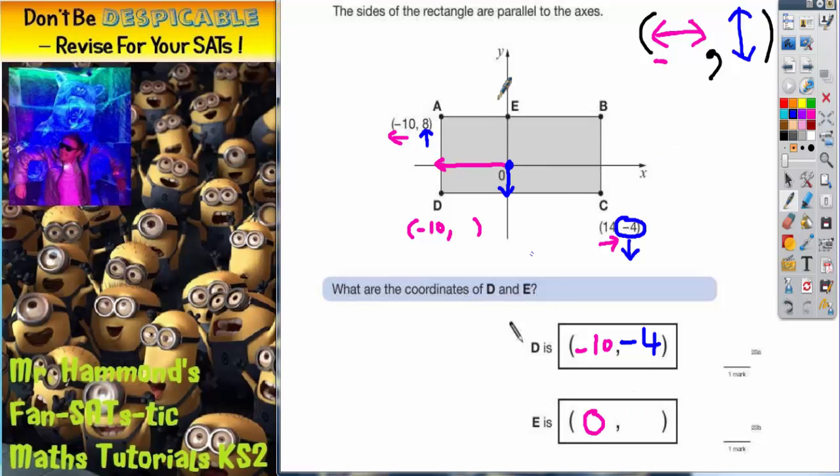What about E? Well if we start at 0 and go up to E, we're getting level with A. And we already know that A is 8 up. So if A is 8 up and it's level with E, E must also be 8 up. So E is going to be 8 up. And there you have it.